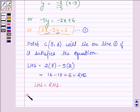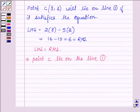So this implies point C lies on the line 1. That is, the 3 points A, B and C lie on the same line.